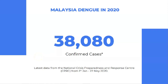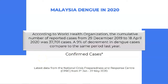This is the latest Malaysia dengue data for 2020, obtained from the National Crisis Preparedness and Response Centre (CPRC), from 1 January to 22 May 2020. There are a total of 38,080 confirmed cases so far. According to the World Health Organization, the cumulative number of reported cases from 29 December 2019 to 18 April 2020 was 37,701 cases, representing a 9% decrement compared to the same period last year.